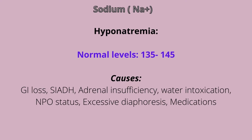Causes of hyponatremia could include GI loss like vomiting and diarrhea, SIADH, adrenal insufficiency — which involves the RAS and ADH process — water intoxication or overhydration, being NPO, as well as excessive diaphoresis, which is sweating. Some medications could also induce hyponatremia.